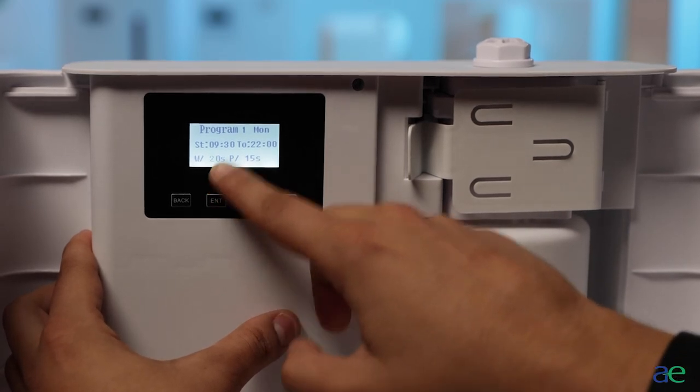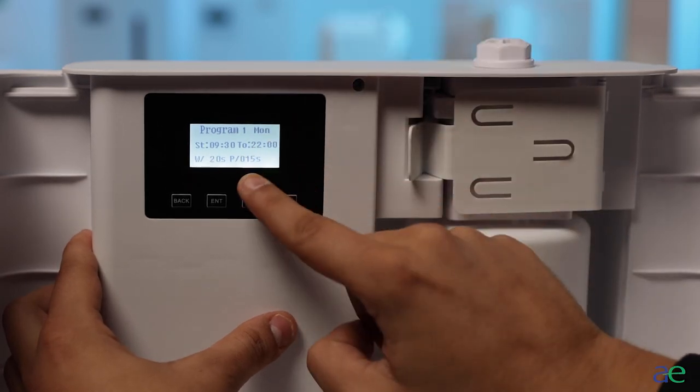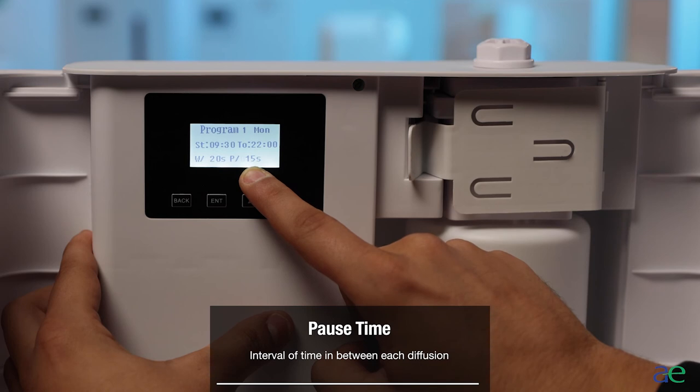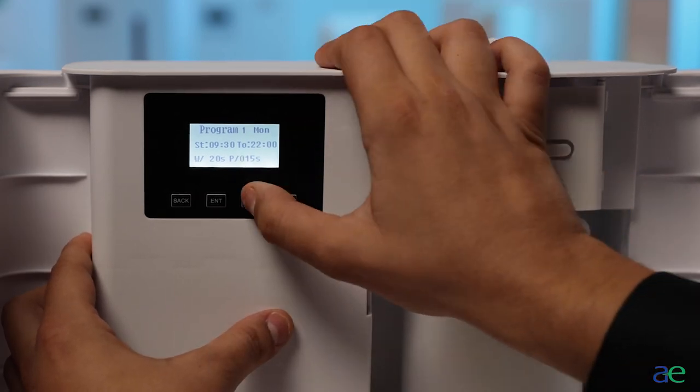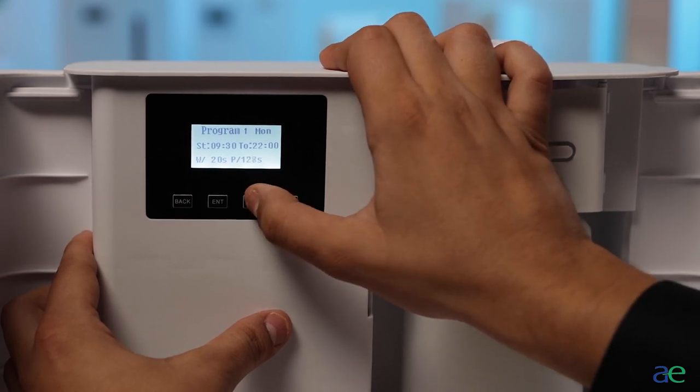Once you have reached the desired time, use the right arrow to move over to the pause time settings. The pause time is the interval of time in between each diffusion. Place the time in seconds for how long you would like the diffuser to pause in between each interval.